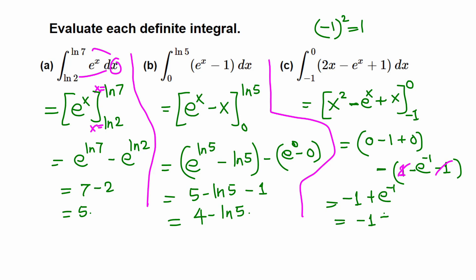This is the final answer, or you can do negative 1 plus e to the negative 1 is 1 over e, where e is an irrational number whose value is about 2.7. So negative 1 plus 1 over e, or you can combine - no need to combine, or you may leave here as final.